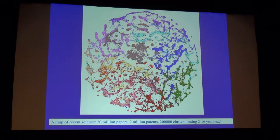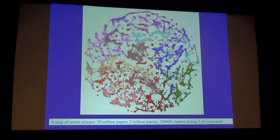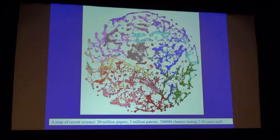Our data nowadays look very beautiful, but you cannot tell what they mean. This is a picture containing the entire science of the last few years — 20 million recent papers and 2 million patents — and using a co-citation network, we identify about 200,000 different disciplines. Each one uses the scientific method, but if you ask scientists working in different fields, they will have very different versions of what they feel are the most essential components of the scientific method.